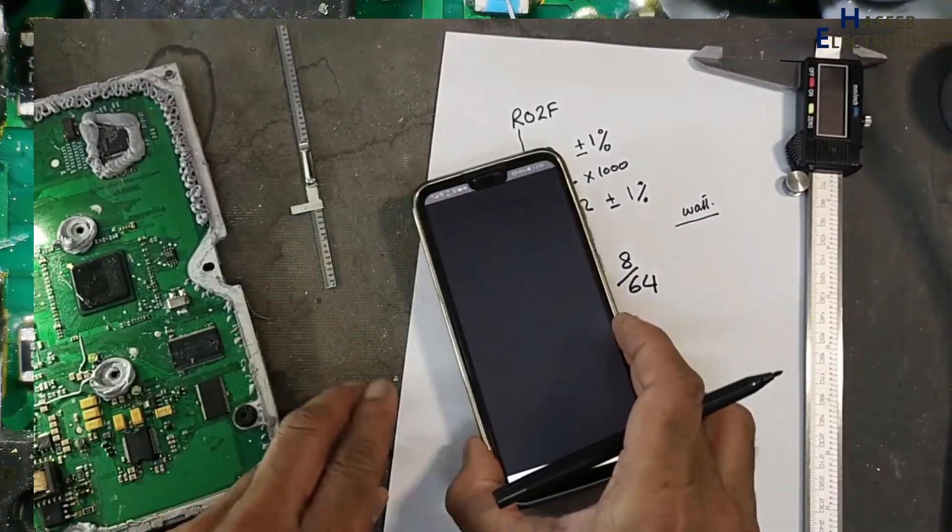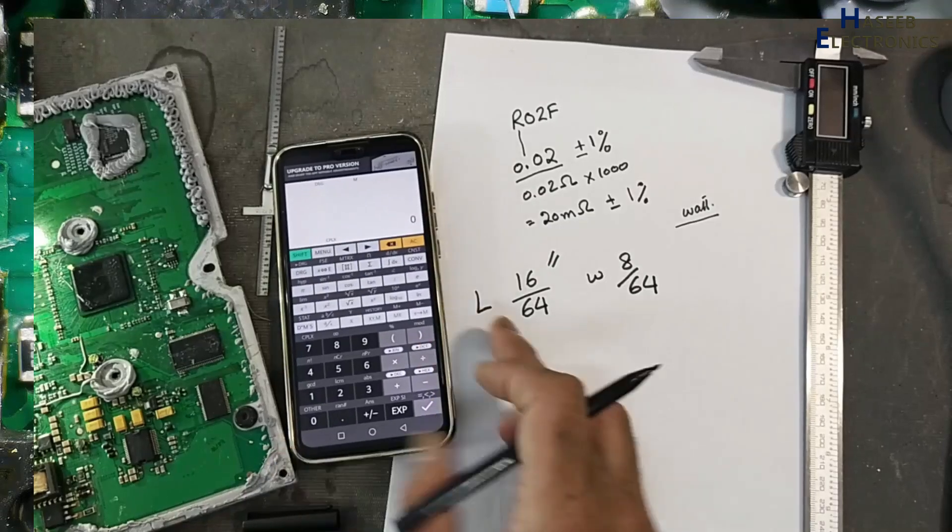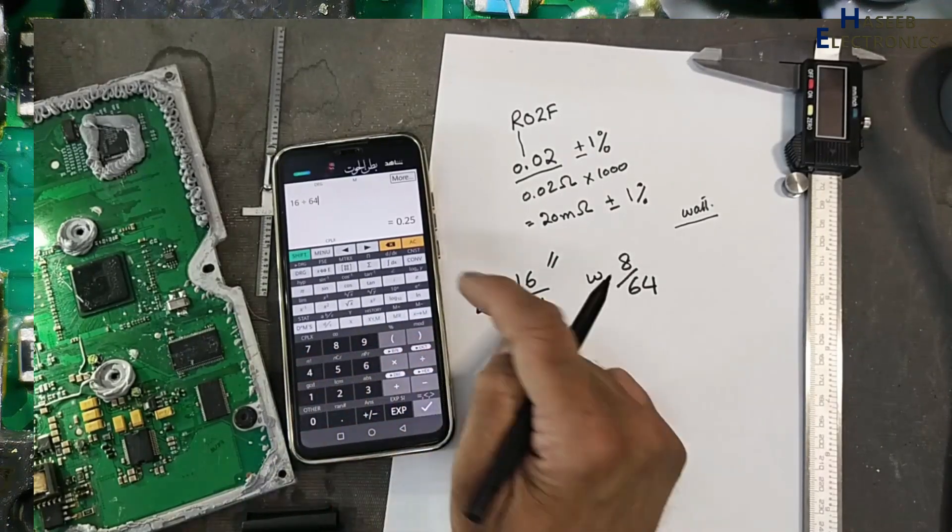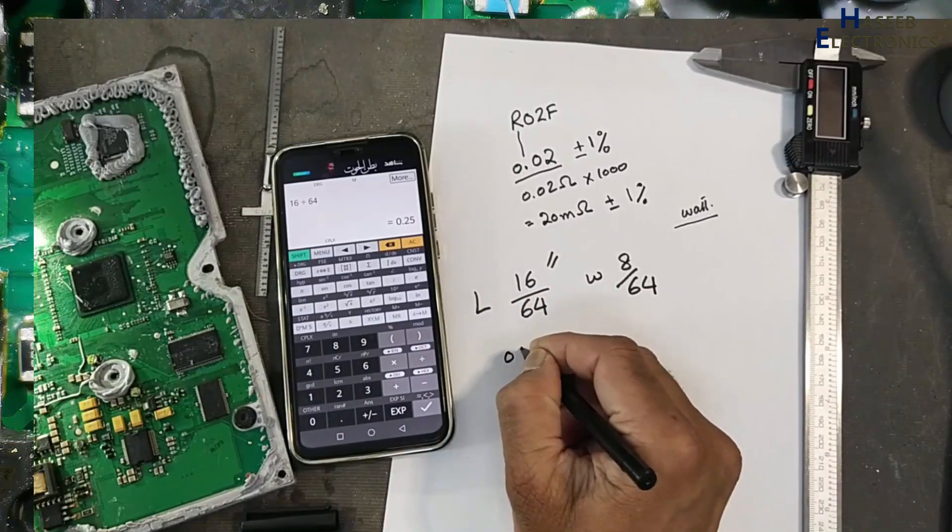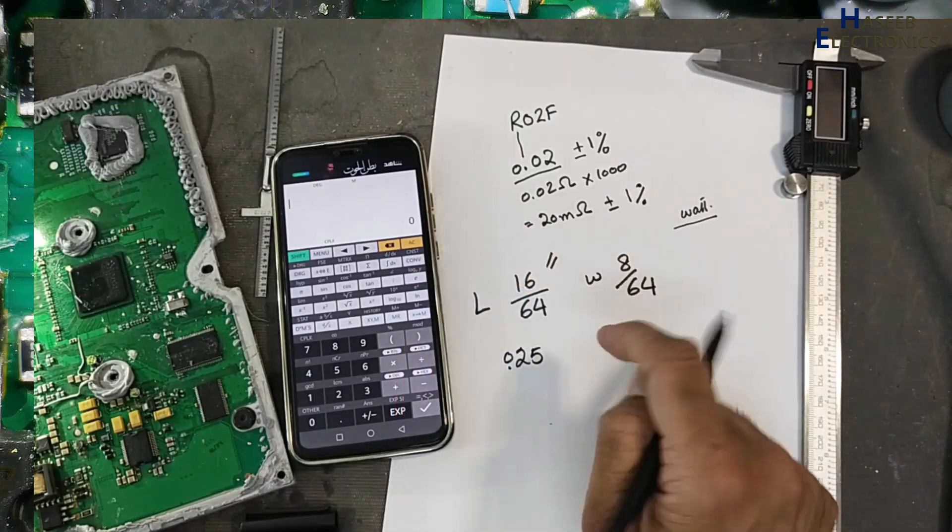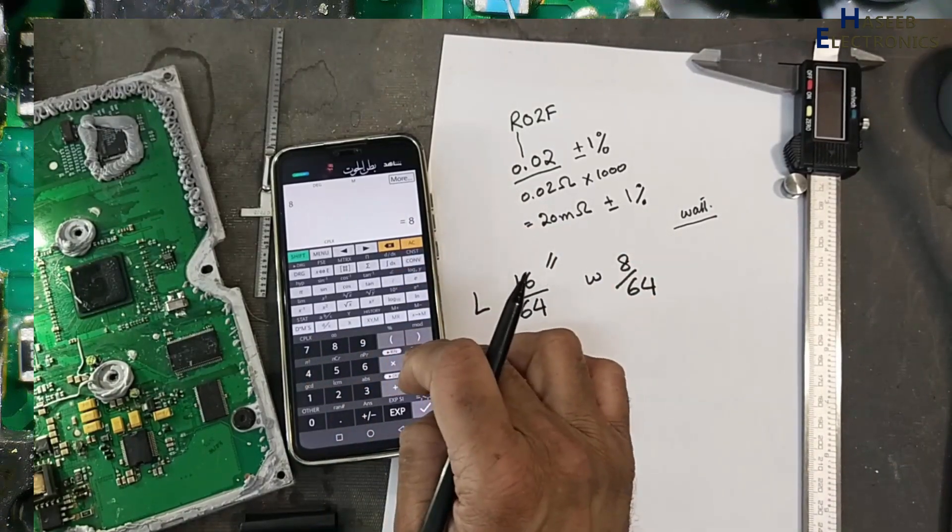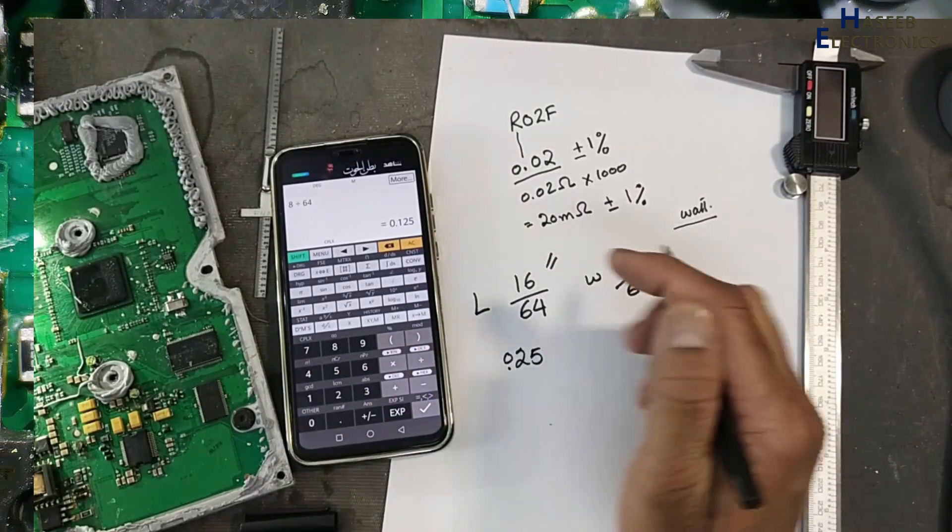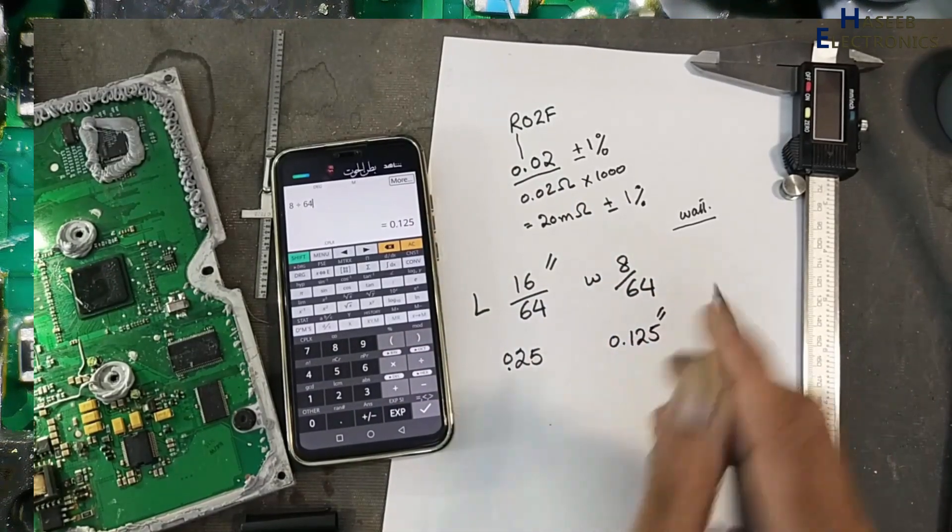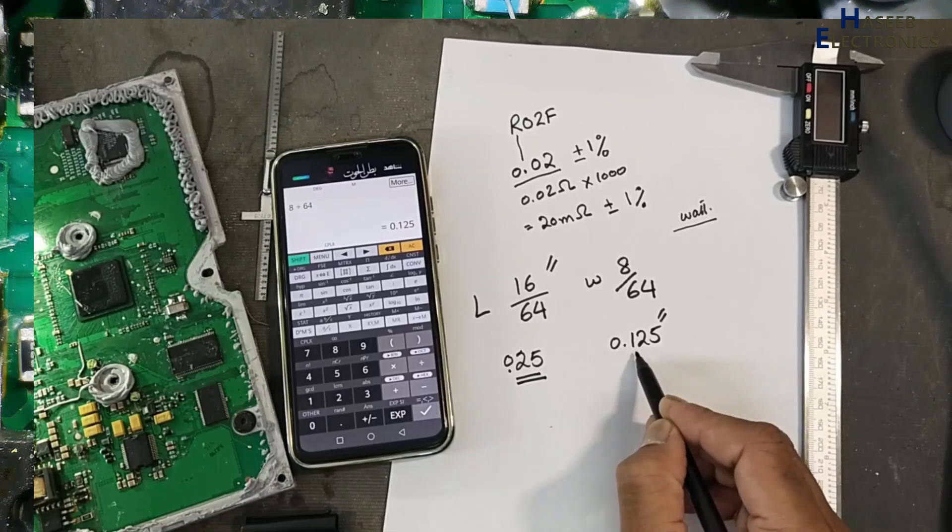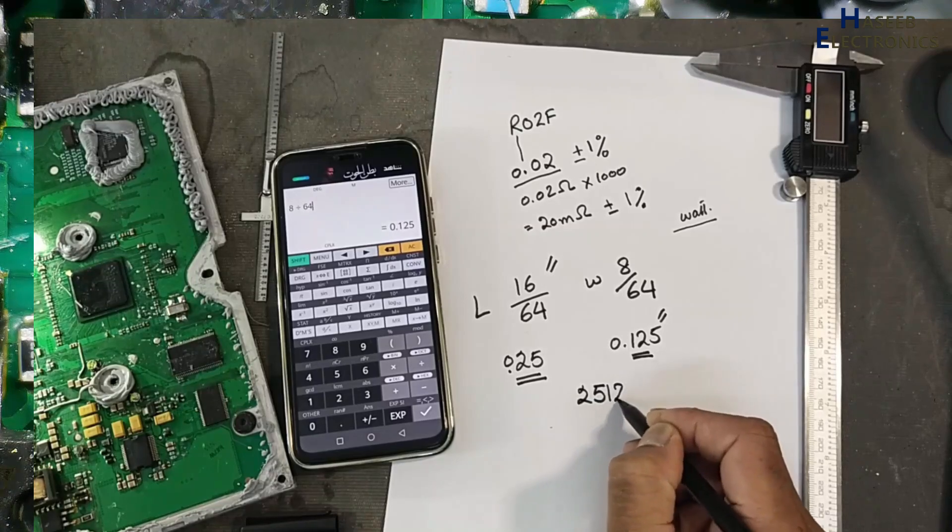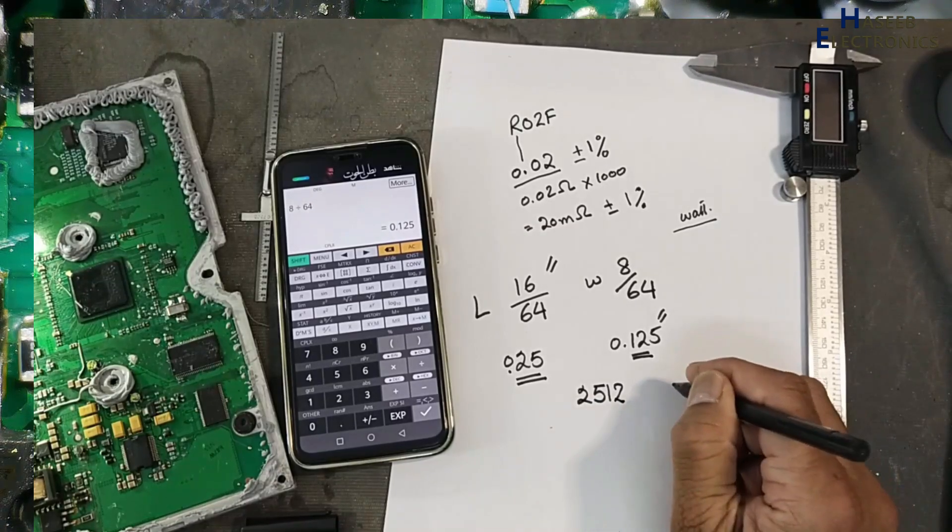Now we will calculate these measurements. 16 divided by 64, it is 0.25 inch. And this is 8 divided by 64, 0.125 inch. We will take this 25 and this 12. 2512. This is imperial code.